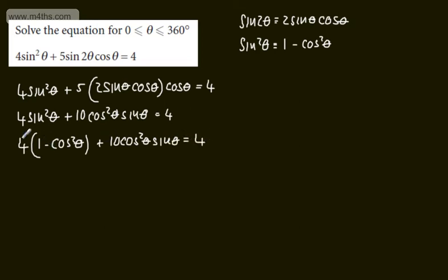The reason I chose this particular approach is that I'm going to have 4 here and 4 here. So 4 on the left hand side, 4 on the right hand side which is going to cancel out. So if I just rewrite this, we've got 4 minus 4 cos squared theta plus 10 cos squared theta multiplied by sine theta is equal to 4.